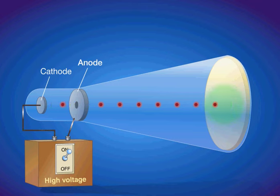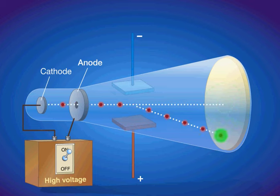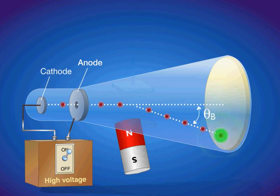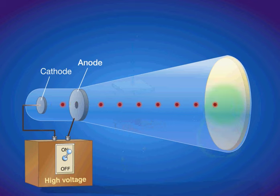He adjusted the electric field so that the electrostatic deflection, theta e, was the same as the magnetic deflection, theta b, and was able to calculate the charge-to-mass ratio of an electron using the following equation.